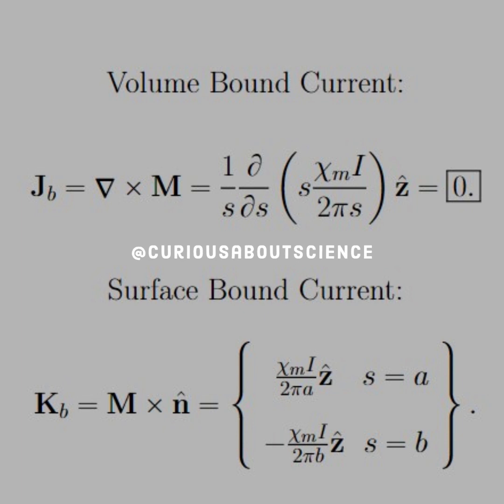And we see that we have chi M I over 2 pi A for S equal A. And negative, of course, because it goes in the opposite direction, chi M I over 2 pi B because S is at B.